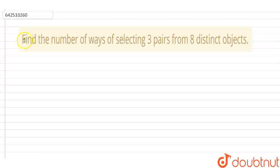Hello everyone, today the question is find the number of ways of selecting 3 pairs from 8 distinct objects. So now, we have 8 distinct objects and we have to make 3 pairs of 2 each.